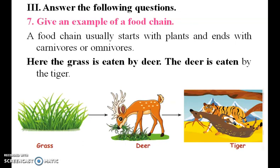Give an example of a food chain. Here is a food chain: grass is eaten by deer, and the deer is eaten by the tiger.